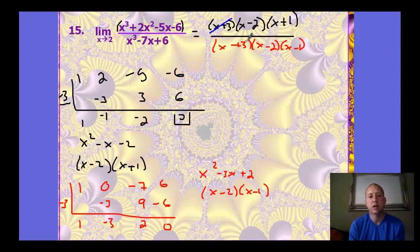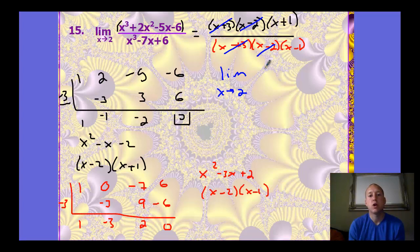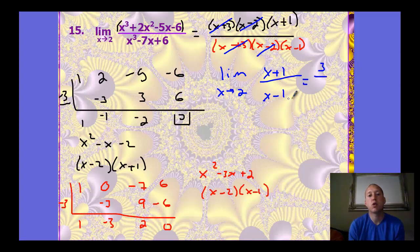Now we can look at reducing. (x + 3) cancels with (x + 3), and (x − 2) cancels with (x − 2) — two factors reduce. We're left with the limit as x approaches 2 of (x + 1)/(x − 1). Plugging in 2 gives 3 over 1, which equals 3. So the limit of the original function is 3.